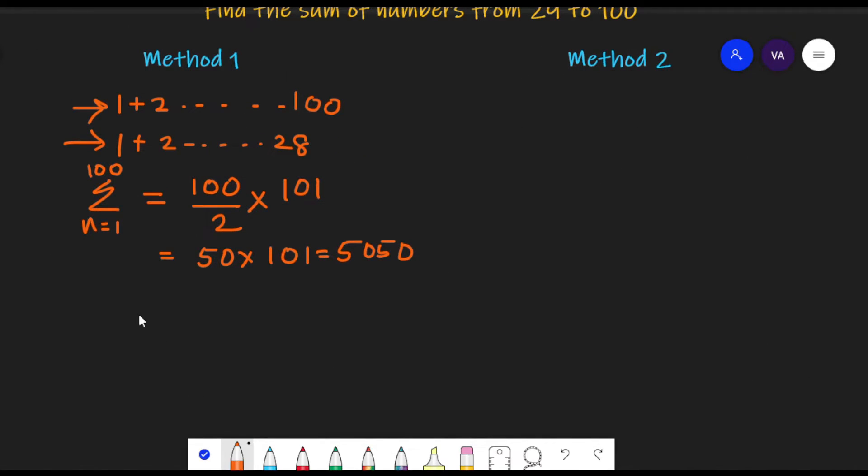Now we find the sum of 28, first 28 numbers. That is, we can write n is equal to 1 to 28. So 28 divided by 2, this is the number of pairs and each pair will have 28 plus 1, that is 29 as the sum. See, we have used the same formula, n into n plus 1 by 2. So 28 divided by 2 is 14, 14 into 29 is equal to 406.